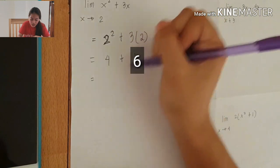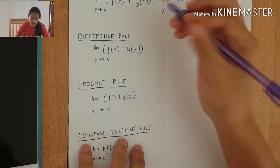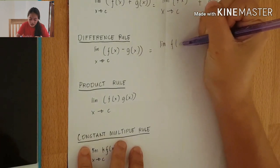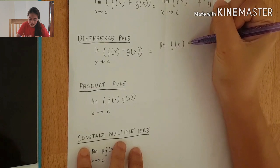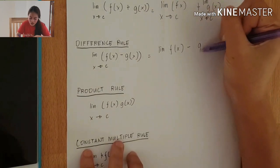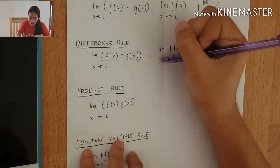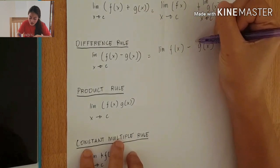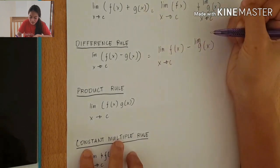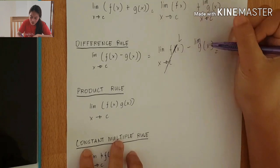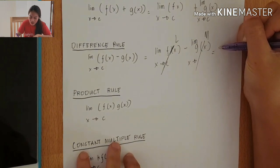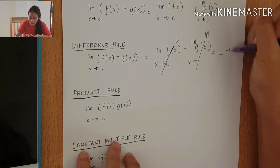The difference rule states that the limit of f(x) minus g(x) as x approaches c is equal to L minus N.